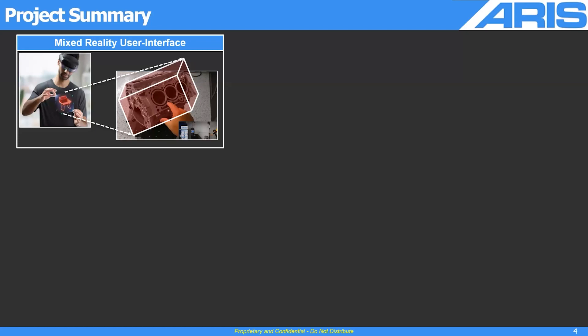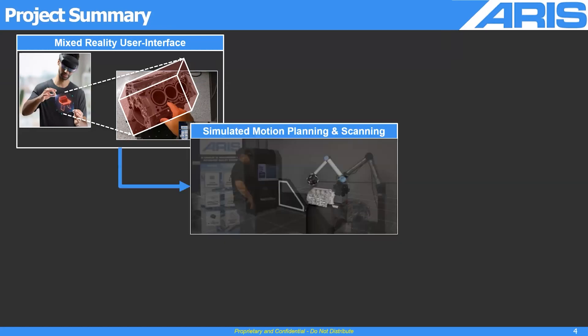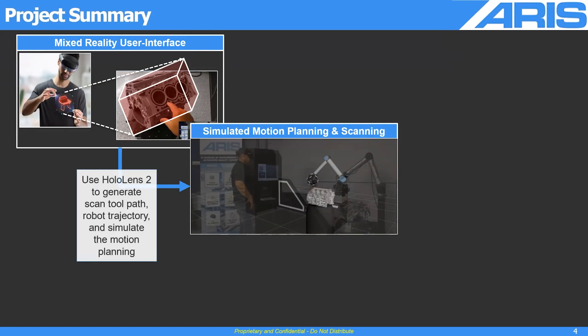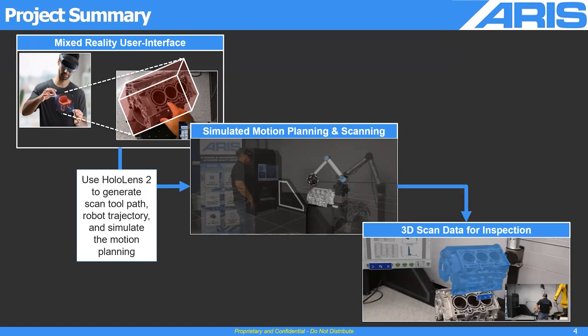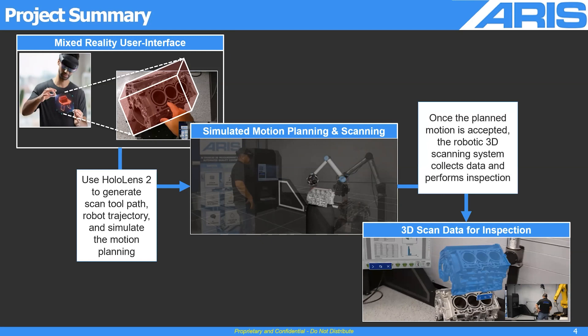The summary of the project is that we are using a Mixed Reality HoloLens 2 user interface to generate connectivity between the digital space and the real space. We are simulating the motion planning and scanning process — this is where the ROS tools are used. We use HoloLens 2 to generate the scan toolpath trajectory and simulate motion planning, finally resulting in 3D scan data for inspection. The simulation data will then be executed in real life by the robot.